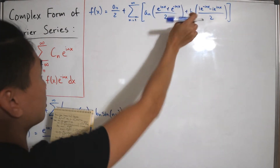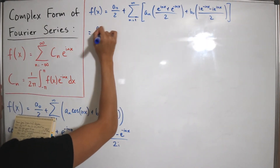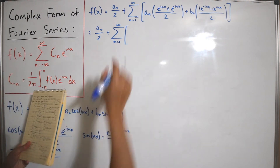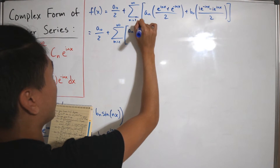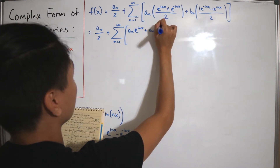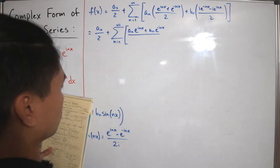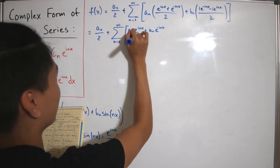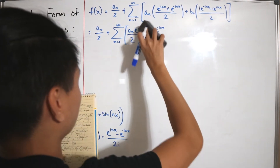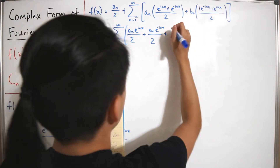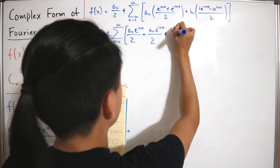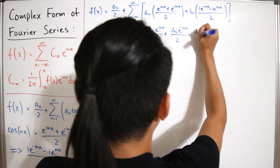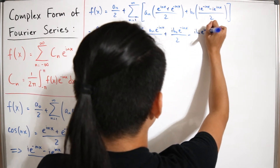Distributing a sub n and b sub n across their respective terms, we get a sub zero divided by two, plus the infinite sum of: a sub n times e to the inx divided by two, plus a sub n times e to the negative inx divided by two, plus i times b sub n times e to the negative inx divided by two, minus i times b sub n times e to the positive inx divided by two.